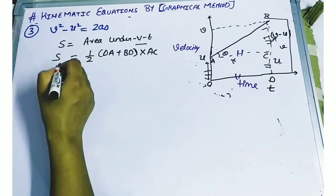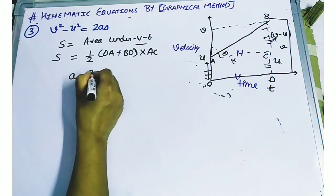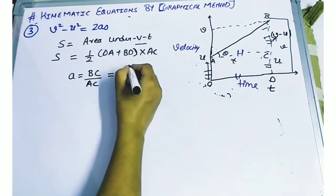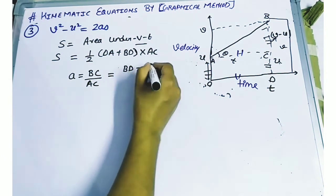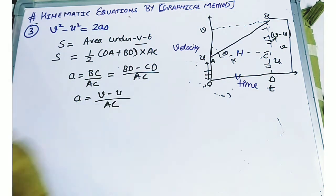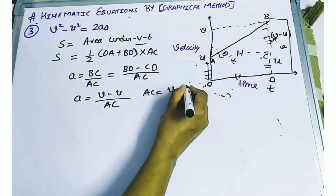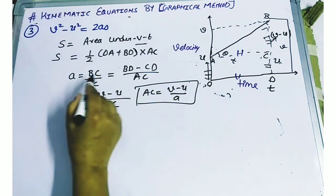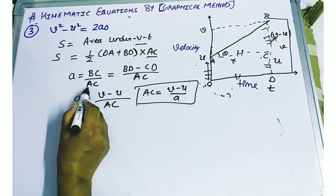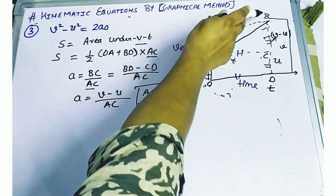Now, here if we see what is the acceleration: acceleration equals BC upon AC. BC equals BD minus CD, so a equals (v minus u) upon AC. Therefore AC equals (v minus u) upon a. We substitute this directly — we want to find out what the velocity is after travelling some distance S, so we derive it from the acceleration formula.